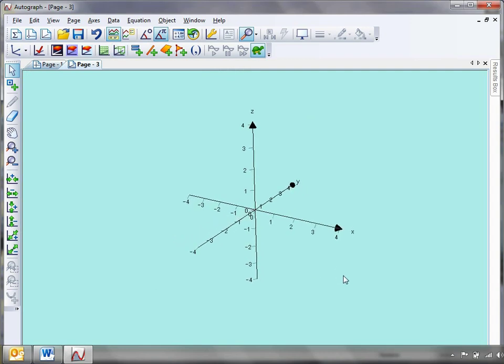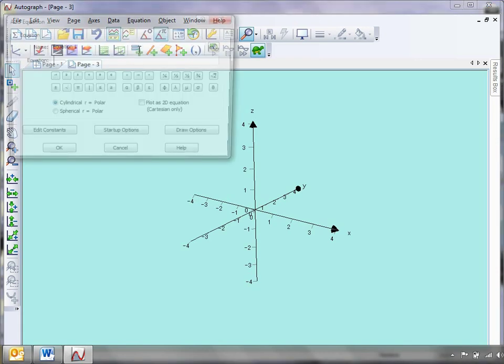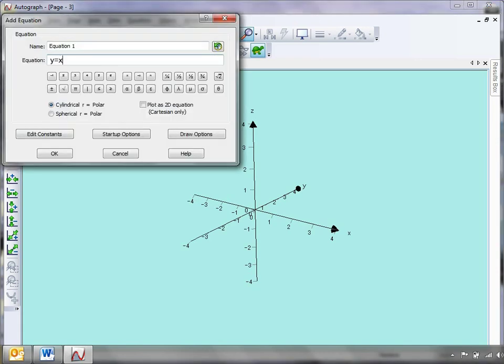Now, before you draw anything 3D in autograph, it's a good idea to see what the students make of it. So I'm going to challenge the students to think what on earth the equation Y equals X squared plus 2 would look like when plotted in 3D. And this goes back to when we were chatting about equations of planes weeks and weeks and weeks ago.